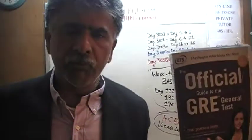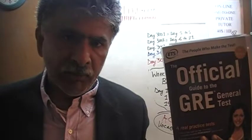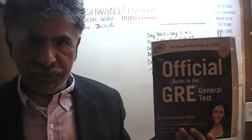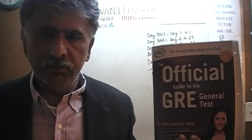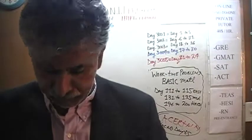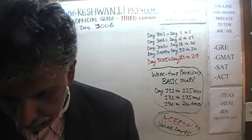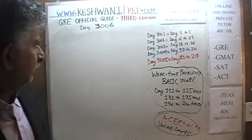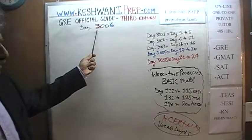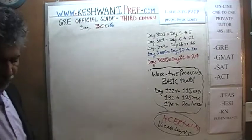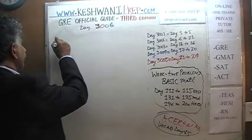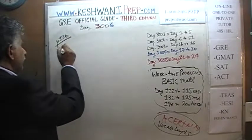We are here because we want to prepare for the GRE. We have been solving math problems out of this book, the official guide to the GRE, the 3rd edition. If you do not own this book already, purchase one immediately. Today is our lesson number 6, Day 3006 — 3 designates the 3rd edition, day 6 — and we are on page number 136. Please turn to it, page 136.